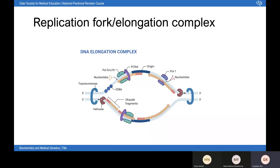One thing I would say: always try to include a replication fork diagram in your essays on DNA replication, as you have mixed-mode examinations. Make sure the diagram is reasonably concise and drawable in one to two minutes — perhaps remove some details like SSBs and more ancillary enzymes.